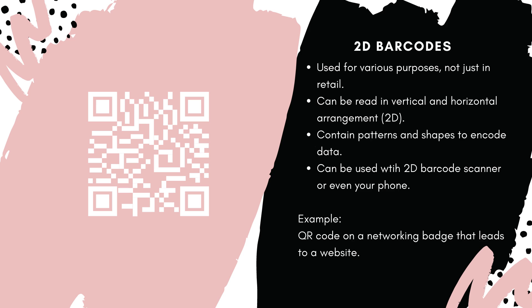The next type of barcode are 2D barcodes. They're used for various purposes, not just in retail, and they can be read in vertical and horizontal arrangements — that's why it's called two-dimensional. They contain patterns and shapes to encode the data, so you might notice dots, squares, lines, even pictures within that 2D barcode, like the totescan labels I demonstrated a couple of videos ago. An example of a 2D barcode would be a QR code on a networking badge that leads to a website, or the QR codes at Best Buy next to their products that take you to the website for item specifics.